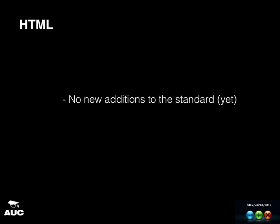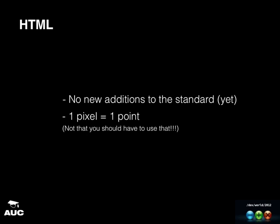Straight off the bat: HTML. There is actually nothing changed in HTML yet — nothing standard at all related to high DPI displays. That might not be a good thing because there are a few tricks in CSS that can't be done with CSS just yet, where you might want native HTML code. That said, all the measurement values in HTML — like table width — are equivalent to one point, so there are no changes needed. Although you probably shouldn't be putting raw pixel values in HTML code anyway — that's what CSS is for.